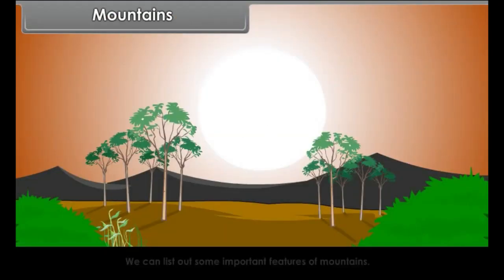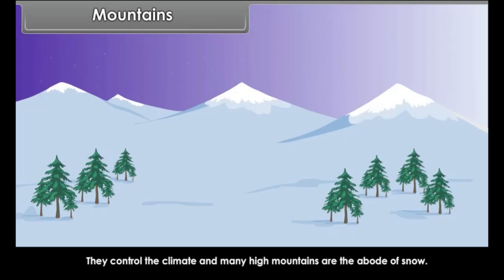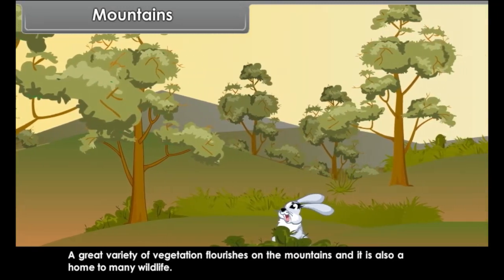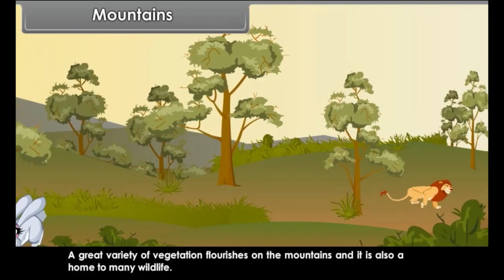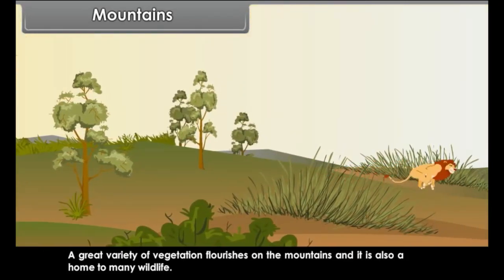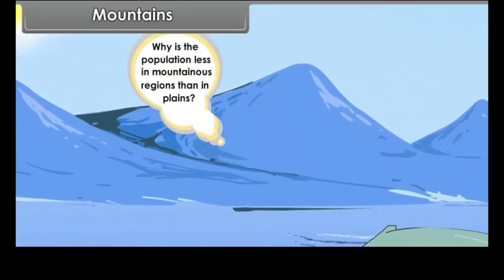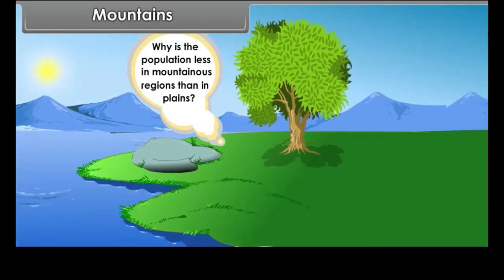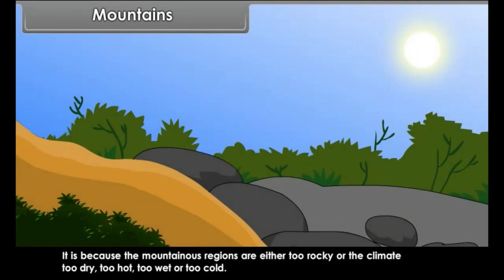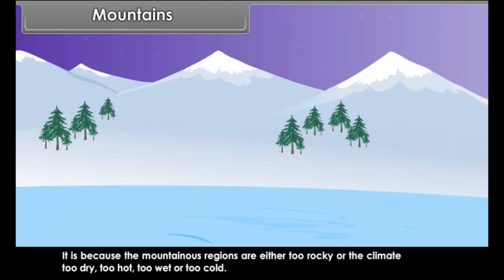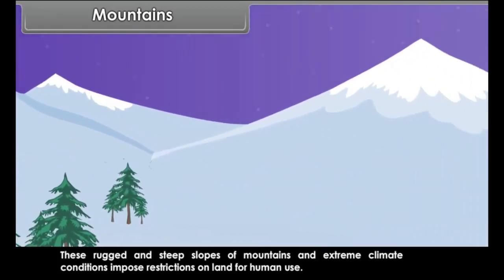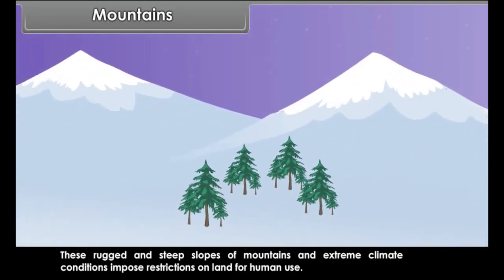Mountains control the climate, and many high mountains are the abode of snow. A great variety of vegetation flourishes on the mountains, and it is also home to much wildlife. Mountains also provide scenic beauty. The mountainous regions are either too rocky or the climate too dry, too hot, too wet, or too cold. These rugged and steep slopes and extreme climate conditions impose restrictions on land for human use.